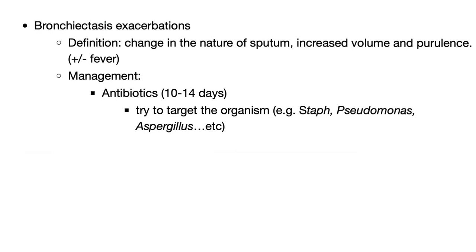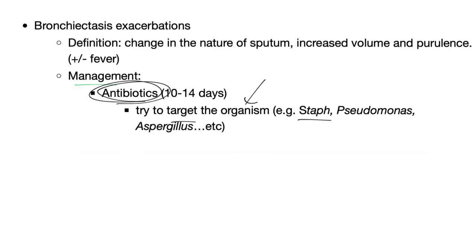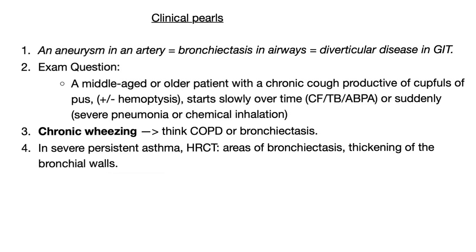Bronchiectasis exacerbation: what is it? A change in the nature of sputum — increased volume and increased purulence. It's more purulent, gunky, and foul-smelling. How to manage: antibiotics, because it's usually bacterial — identify the organism with sputum stain and culture.